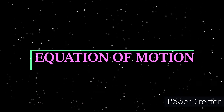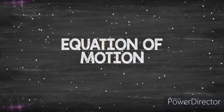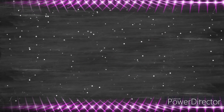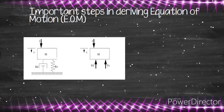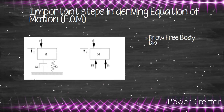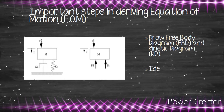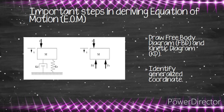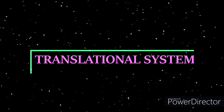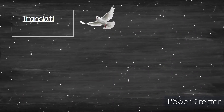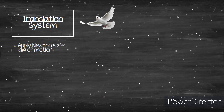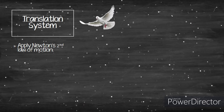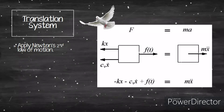The next subtopic is the equation of motion. For a free body diagram of an undamped system, the important steps in deriving the equation of motion are: first, draw the free body diagram and kinetic diagram; and second, identify and generalize the coordinates. This applies to both translational and rotational motion, where we sketch the FBD and apply Newton's Second Law to obtain the force expression.